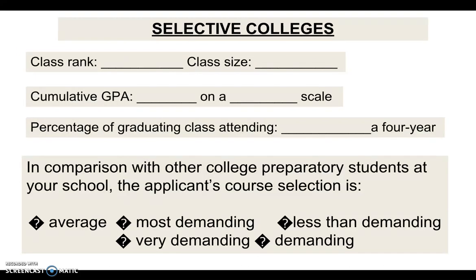Those selective colleges will ask us — the counselors — to complete a sheet on those students. We will have to put in their class rank, how large the class is, their GPA, the percentage of students who normally attend a four-year school. Then we have to rank those students in comparison with their peers as to what kinds of classes they have taken — whether it's been a demanding schedule with lots of honors and AP, or a less demanding general curriculum.